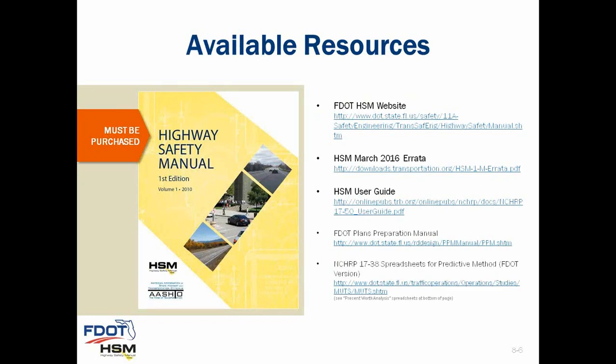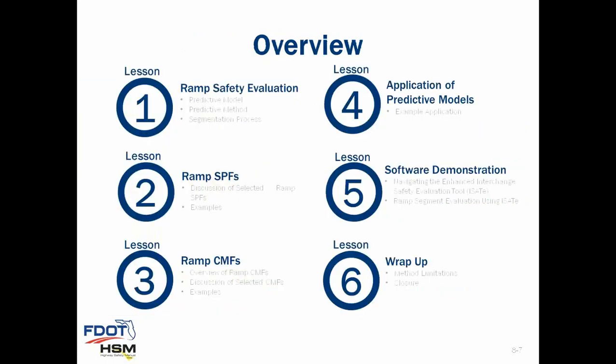The presentation consists of six lessons taken in order. In the first lesson, we will talk generally about using the HSM predictive method for ramp safety evaluation. In lessons two and three, we'll discuss the safety performance functions (SPFs) and crash modification factors (CMFs) that make up the predictive method. In lesson four, I'll show how the method is used to evaluate a ramp segment. Lesson five demonstrates spreadsheet software to automate the process, and in lesson six I'll wrap up and take questions.